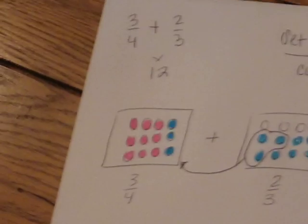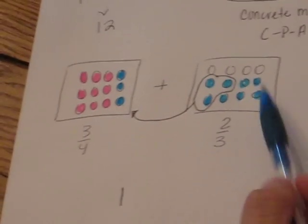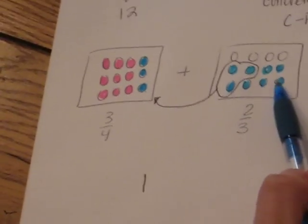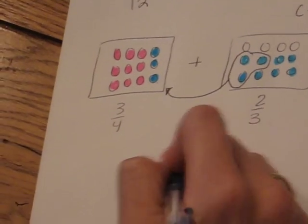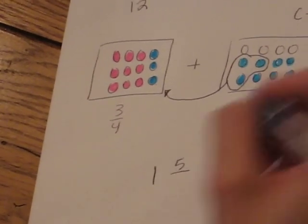And the reason I did that is now that I can see that I have one hole. Then I need to come back over here and see that I have one, two, three, four, five, five out of a total of twelve.